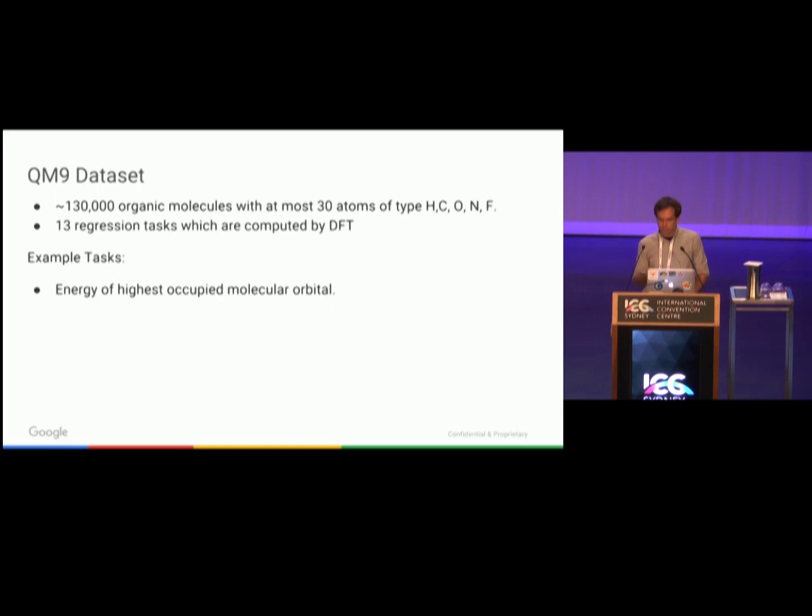We're going to predict each task using a mean squared error. Just an example of two tasks: one is the energy of the highest occupied molecular orbital, which I'm not a chemist, but the chemists tell me that's like the most reactive electron in your molecule. Another task is like the heat capacity of the molecule.